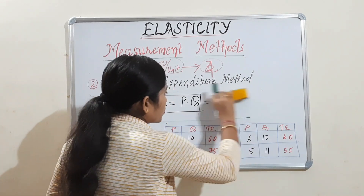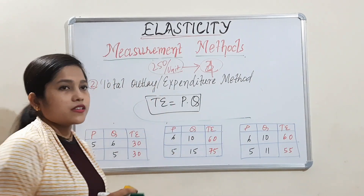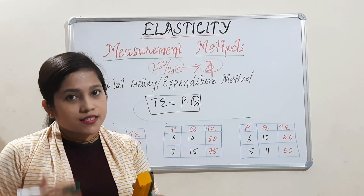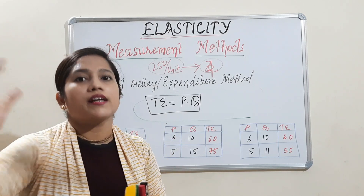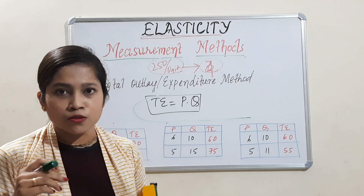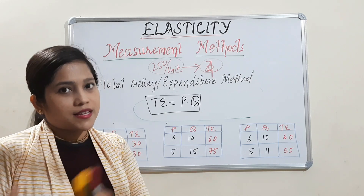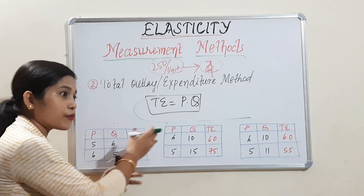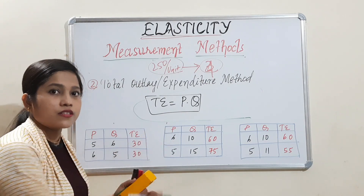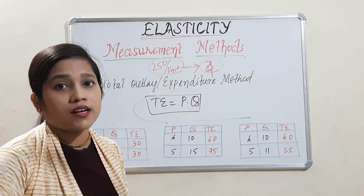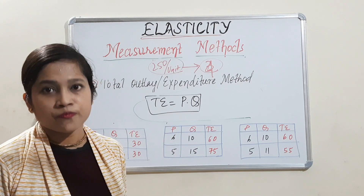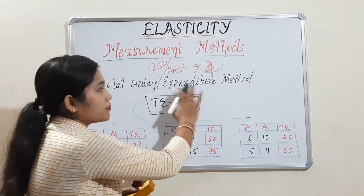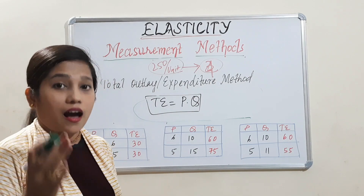Here, our total concern is: previously what we have done is, when the price changes, how much change occurred in the quantity demanded. We were measuring elasticity in that form. But here our concern is, when price changes, how much change occurred in total expenditure. In that form, we will measure the elasticity.